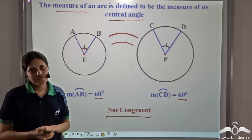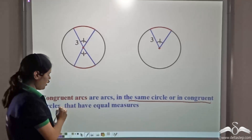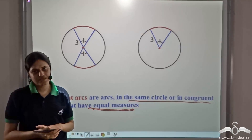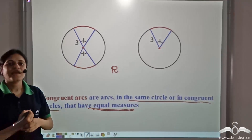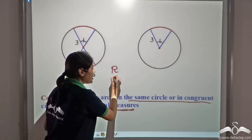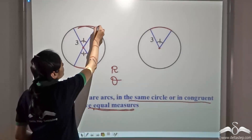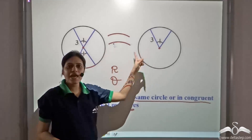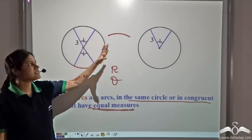When will two arcs be congruent? Two arcs will be congruent firstly if they are in the same circle or in congruent circles, and secondly if they have equal measures — that is, the angle subtended at the centre should be equal. Only then can we say the two arcs are congruent. In this case, these two arcs are in congruent circles (radius is 3 units) and the central angle is the same, so these two arcs perfectly overlap each other — hence they are congruent arcs.